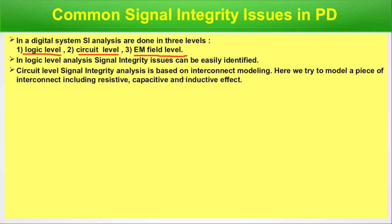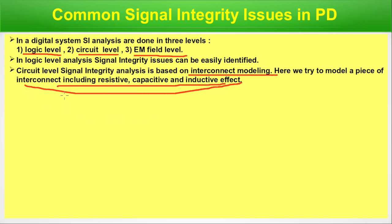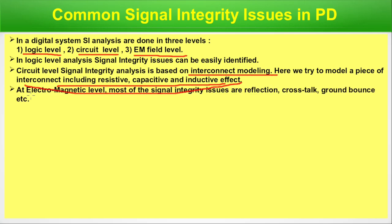Circuit level signal integrity analysis is based on interconnect modeling, where we calculate delay due to interconnects and try to model a piece of interconnect including resistive, capacitive, and inductive effects — that is parasitic effects. At electromagnetic level, most signal integrity issues are reflection, crosstalk, and ground bounce. We have discussed reflection in a previous episode; crosstalk was introduced in the first episode of this series, and today we will elaborate those points. Ground bounce has a separate episode, link provided in the description.